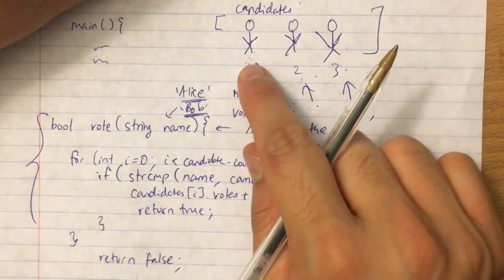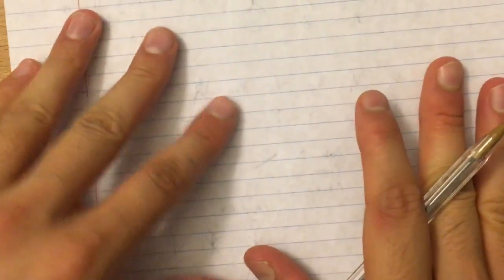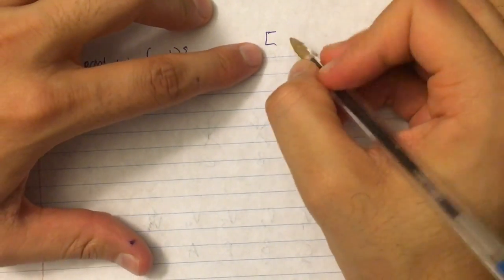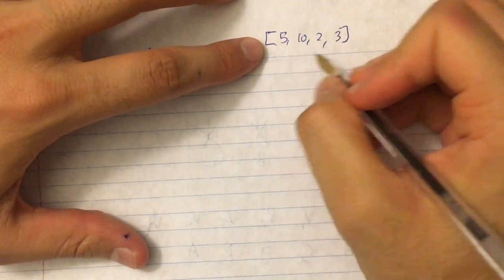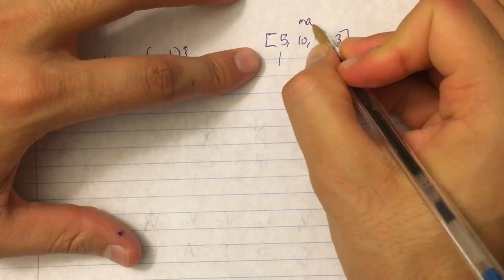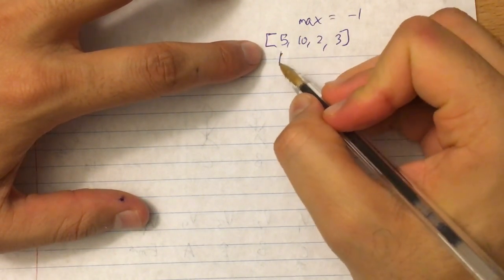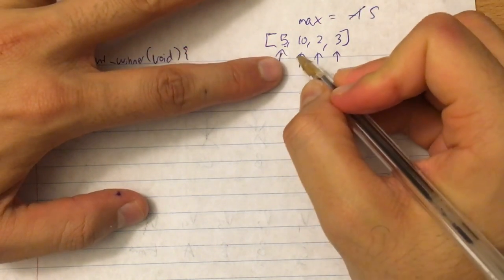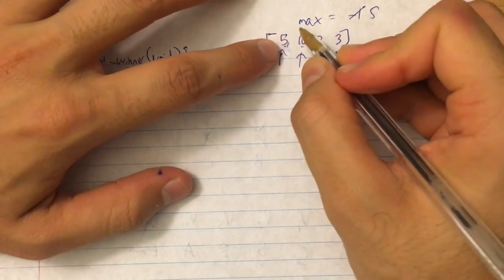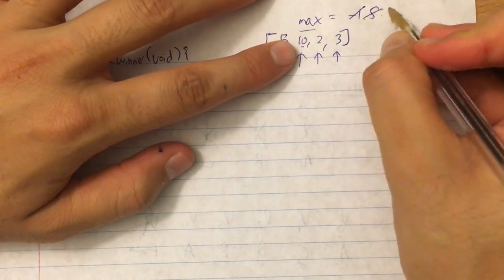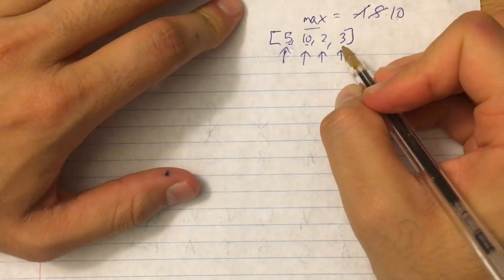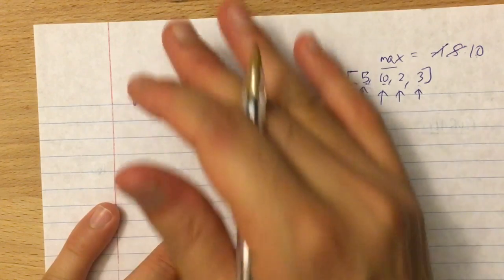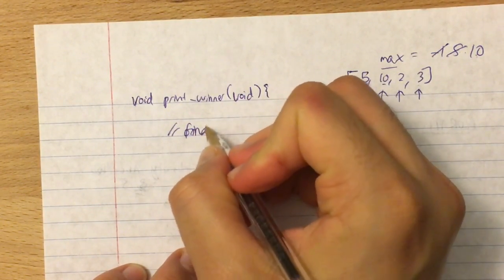It's the same idea as finding the max in an array: 5, 10, 2, 3. Initialize max to negative one, go through each element and update. Is 5 greater than -1? Yes, update to 5. Is 10 greater than 5? Yes, update to 10. Is 2 greater than 10? No. Is 3 greater than 10? No. So max is 10. Same idea with the candidates array — keep track of who has the maximum votes.